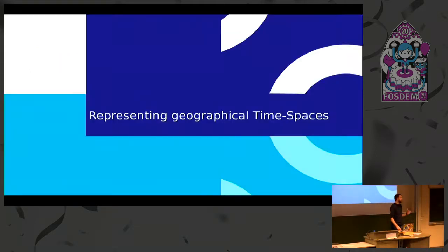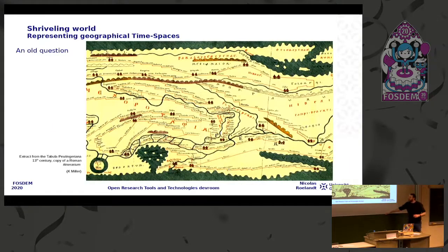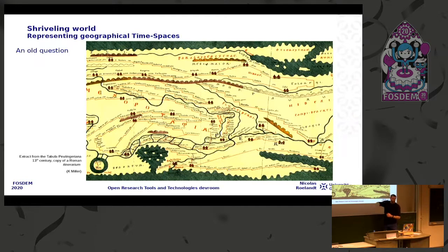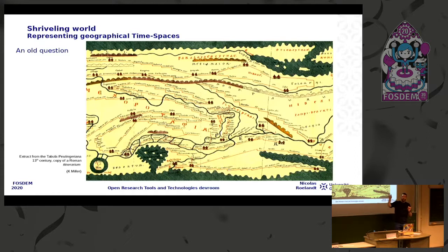I'll show you some examples and then show you a little bit of Shriving World to try to mitigate the issues. This is old data — the Pettinger table, which is a medieval document about the Roman itinerarium. If you look at the orange line with steps on it, it's believed that one step represents one day travelled by horse. So a merchant could say, okay, to go from here to there I have many days of travel. It's actually a solution, though not a perfect one.